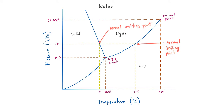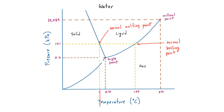Also worth noting are the normal boiling point and the normal melting point. In terms of phase diagrams, the word "normal" refers to the melting or boiling point at atmospheric pressure, which is about 101 kilopascals. So the normal melting point for water is zero degrees Celsius, and the normal boiling point is 100 degrees Celsius, both at atmospheric pressure of 101 kilopascals.